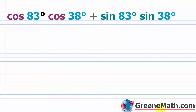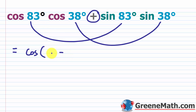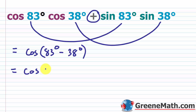You might also see these problems rearranged. For example: cosine of 83 degrees times cosine of 38 degrees plus sine of 83 degrees times sine of 38 degrees. Recognizing this matches the cosine difference identity — with a plus here, we want a minus — we write it as cosine of 83 minus 38 degrees, which is cosine of 45 degrees, equal to the square root of 2 over 2.